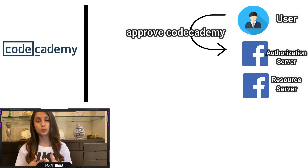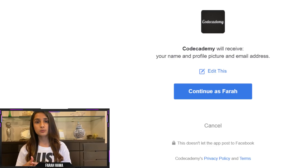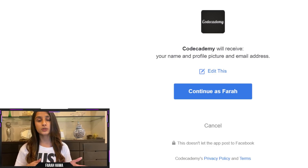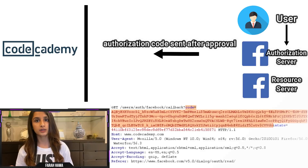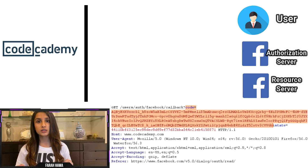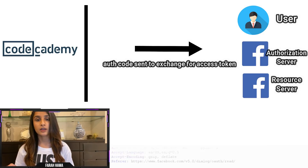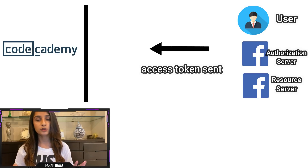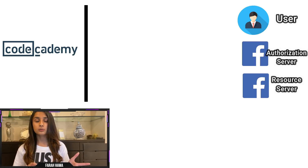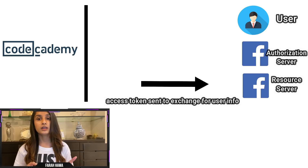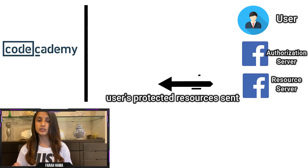Then we have the state parameter, which is optional but contains a CSRF token. The user then logs into his Facebook account and approves Code Academy to access his information. Once Facebook receives the user's approval, it will send an authorization code to Code Academy. Code Academy uses that code to request an access token from Facebook's authorization server. Facebook verifies the received code and sends an access token to Code Academy, which then sends it to Facebook's resource server in exchange for the user's details.